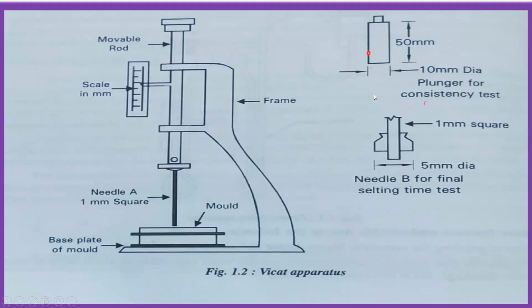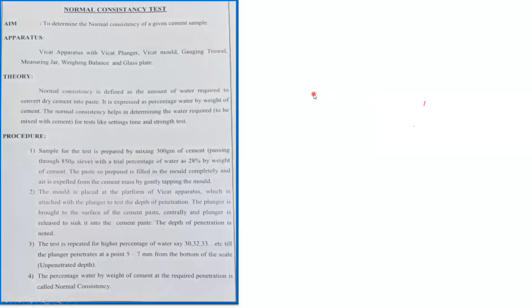The aim of this test is to determine the normal consistency of a given cement sample. The apparatus required includes the Vicat apparatus with a Vicat plunger, a Vicat mold, a gauging trowel, a measuring jar, a weighing balance, and a glass plate. Normal consistency is defined as the amount of water required to convert dry cement into paste, expressed as a percentage of water by weight of cement.